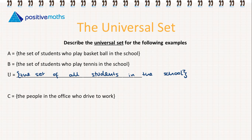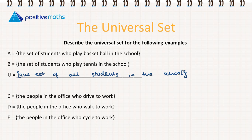Our next example, we have C: the set of people in the office who drive to work. D: the people in the office who walk to work. And E: the people in the office who cycle to work. So the universal set, this is going to be all of the people that work in the office.